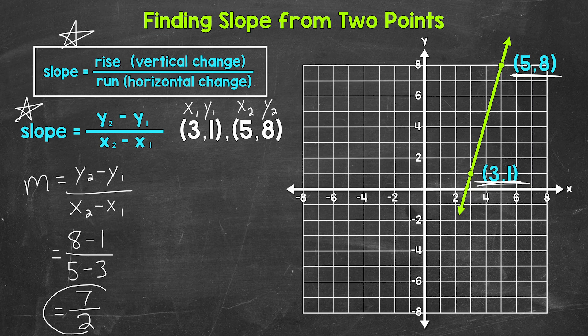7 over 2. 7 halves. 7 is our rise. And 2 is our run. That formula gave us the rise and the run. So the vertical change and the horizontal change. Now you may also hear the rise called the change in y. And the run called the change in x.